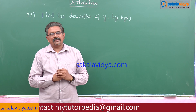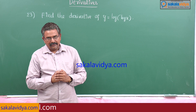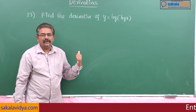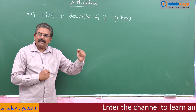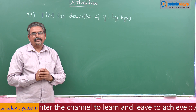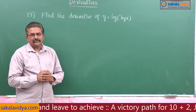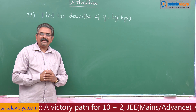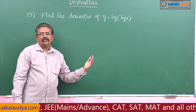Log u differentiation is 1 by u into du by dx. So if you want to find out this problem, the log of log x differentiation becomes 1 by log x into d by dx of log x, which is 1 by log x into 1 by x. So the answer is 1 by x log x. In this way we can find out the derivative of the given problem.